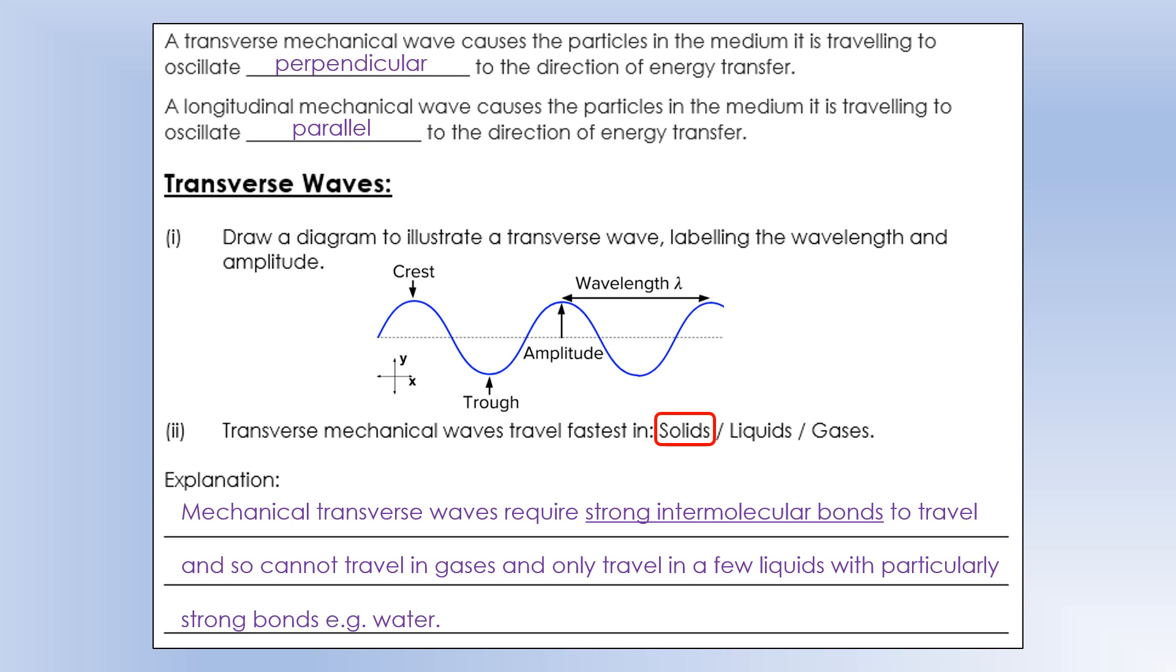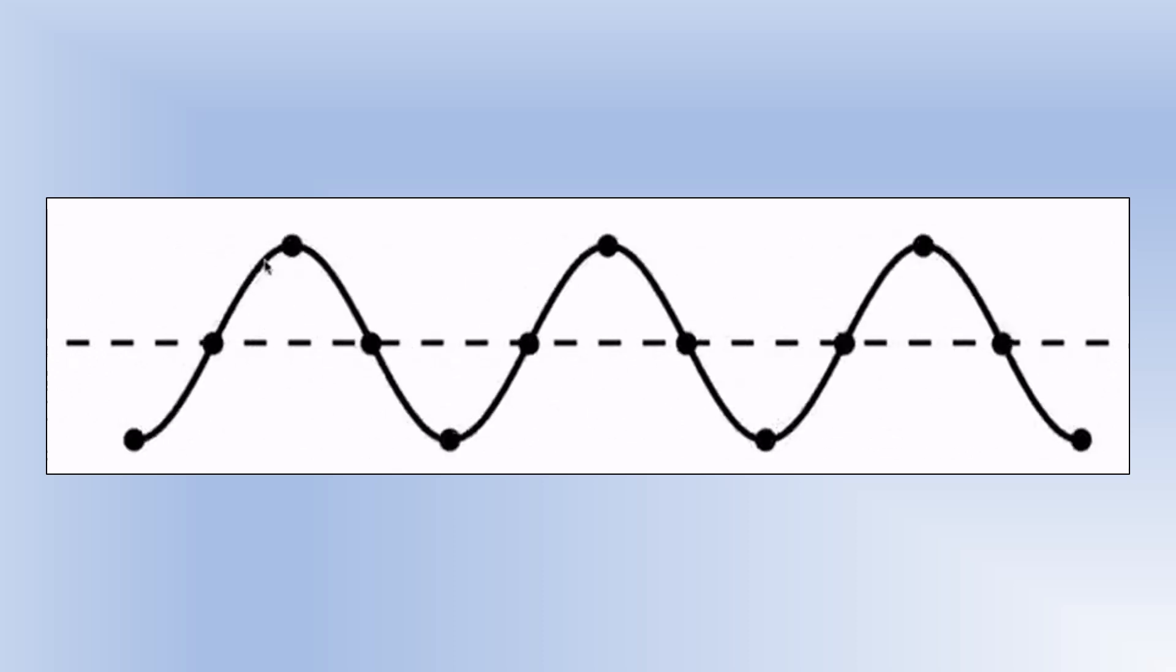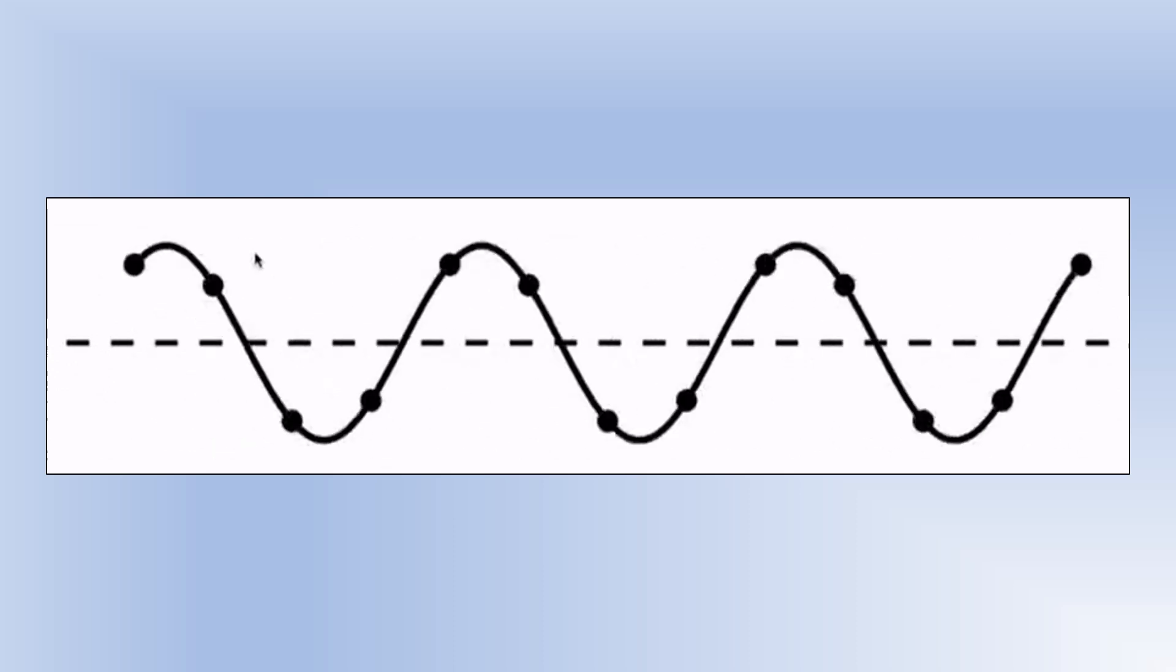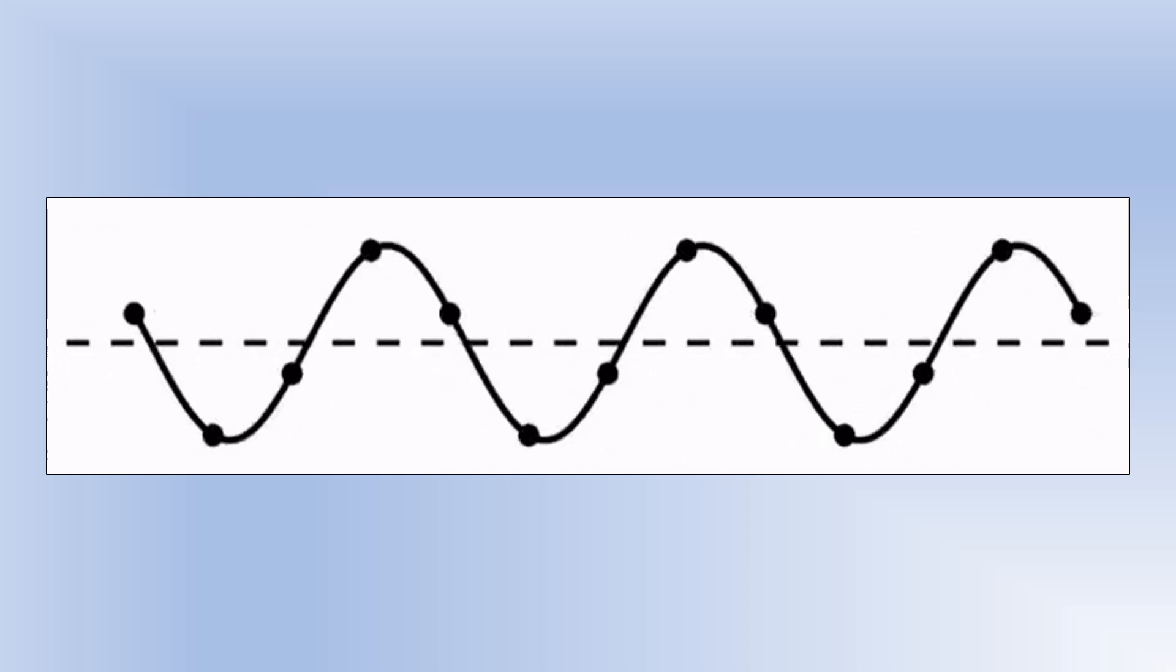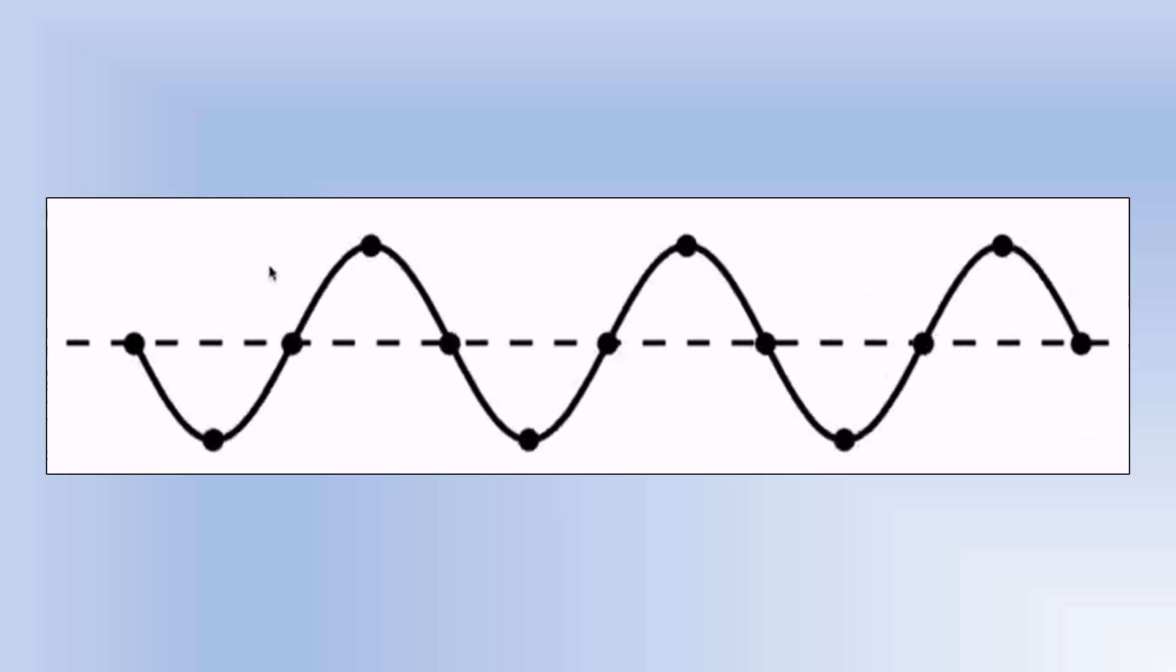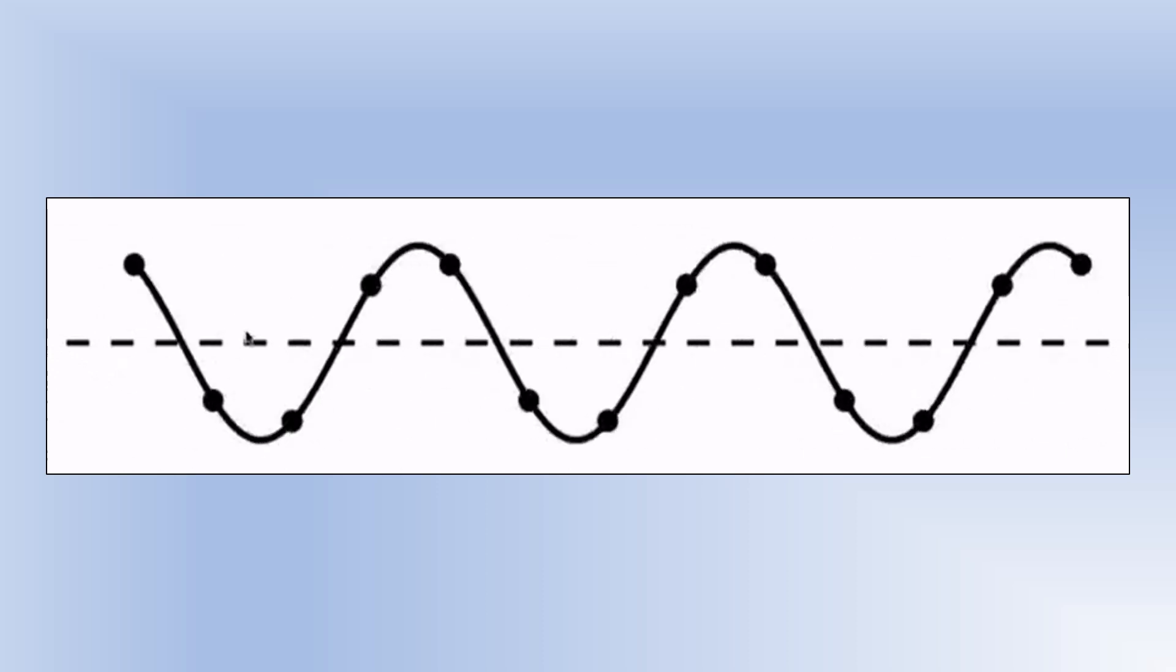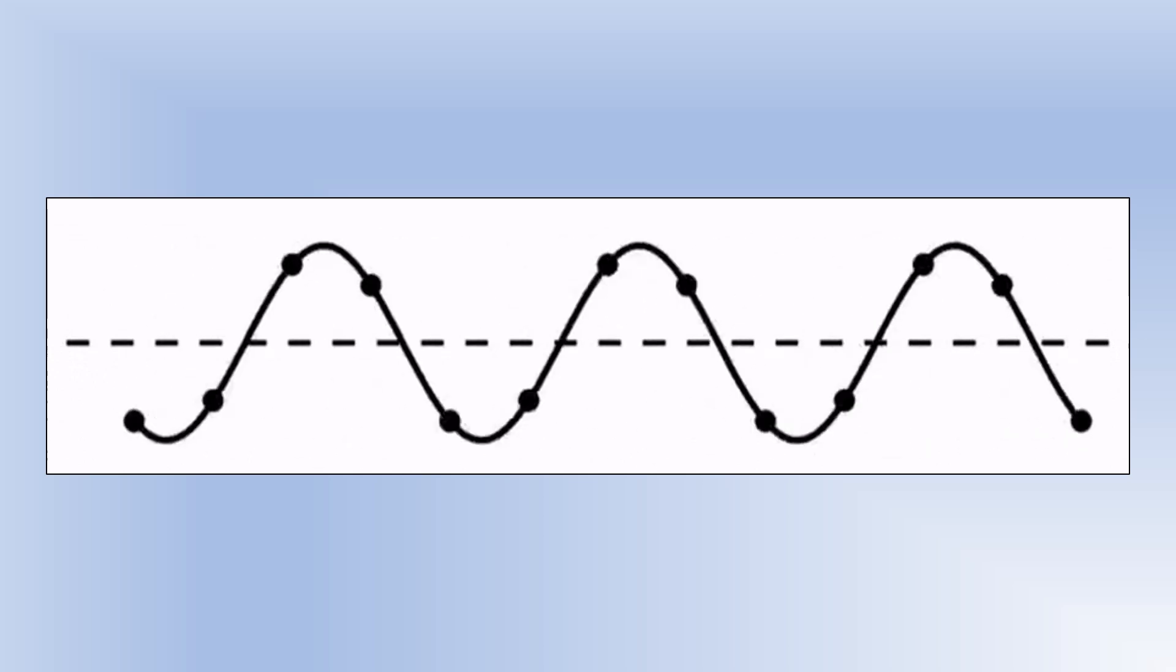Okay, so let's take a look at the next slide and actually have a look at a transverse wave. So you've got the blobs on here to mark the particles of the medium, which you can see oscillate up and down, whereas the energy is being transferred left to right on this illustration. And so you can see the particles never actually collide with each other, which is why you need the strong intermolecular bonds, so that they all move together when you start oscillating the one on the far left.